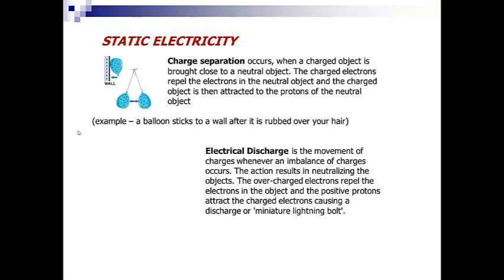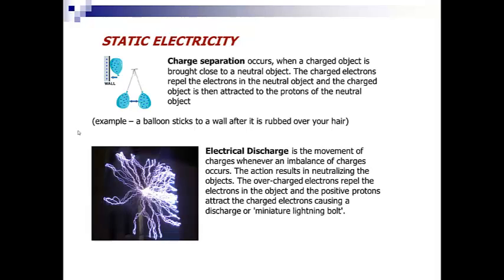Electrical discharge is the movement of charges whenever an imbalance of charges occurs. The action results in neutralizing the objects. The overcharged electrons repel the electrons in the object, and the positive protons attract the charged electrons, causing a discharge or miniature lightning bolt. So here is an example of electrical discharge.